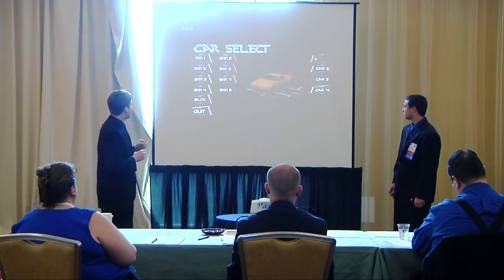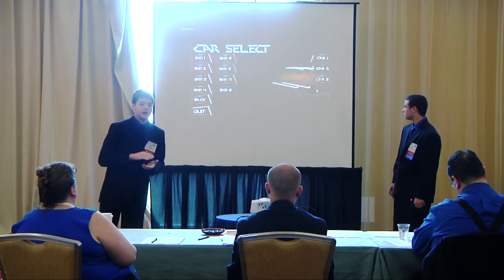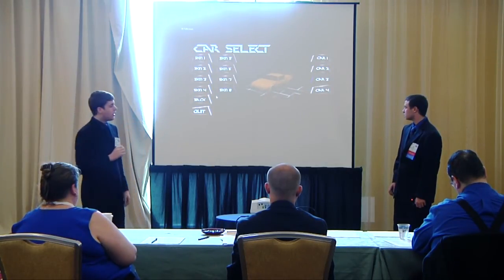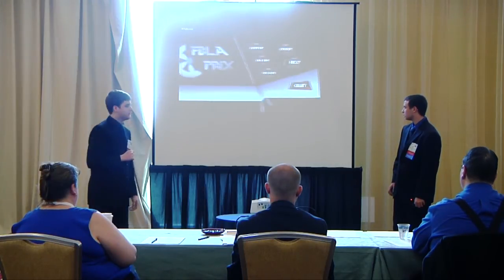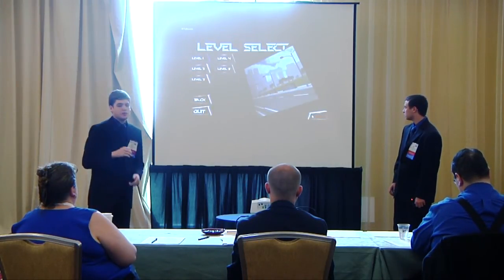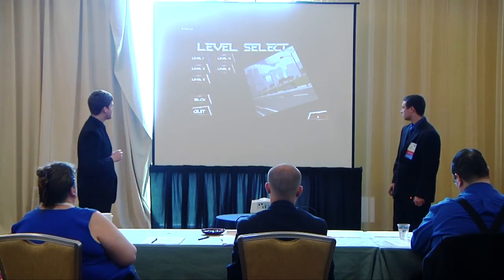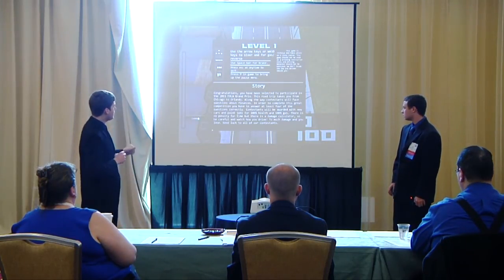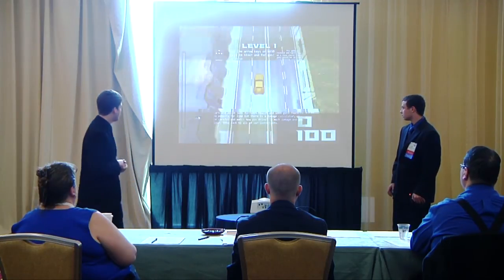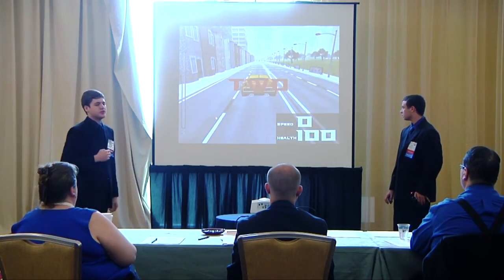Normally, only skin1 and car1 would be unlocked. You unlock these by getting 100% health or all five questions right on a level. Now we're going to show you the first level of the game, which takes place in Chicago. Here we have the story, our same keystrokes, and a warning. We start off with a 3-2-1 go sequence.